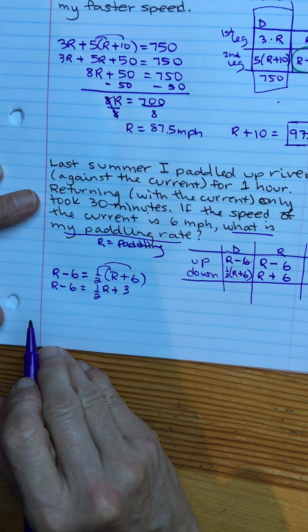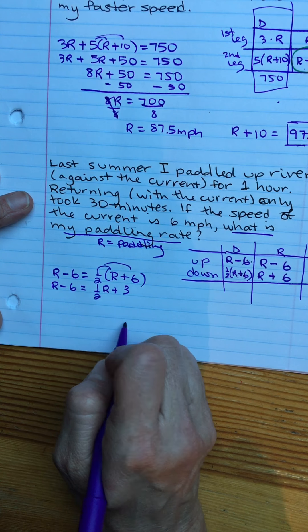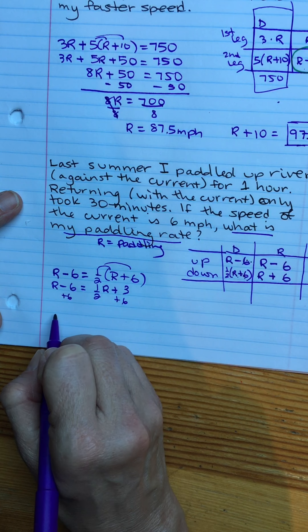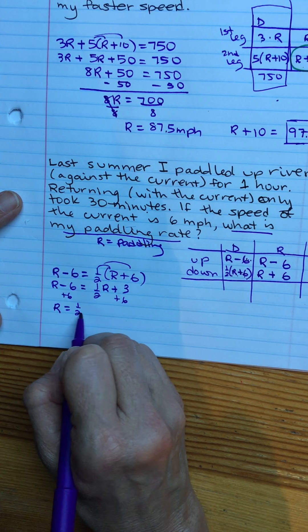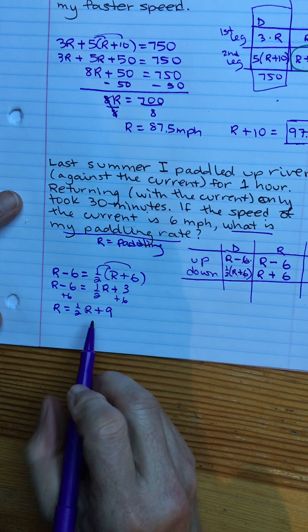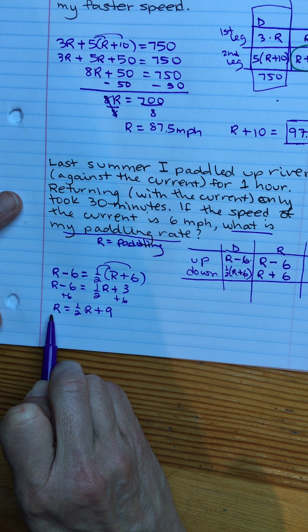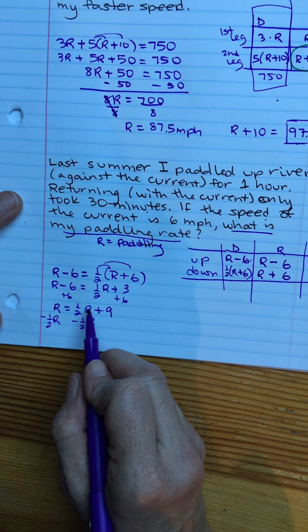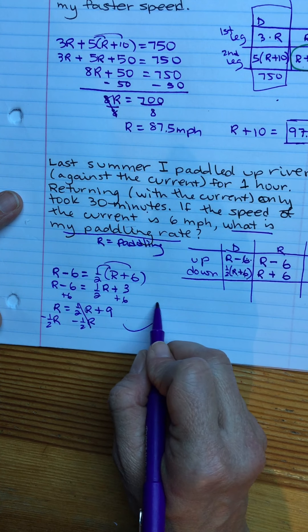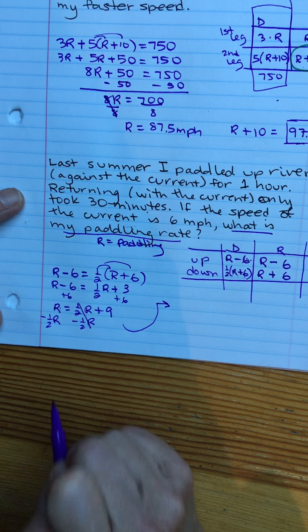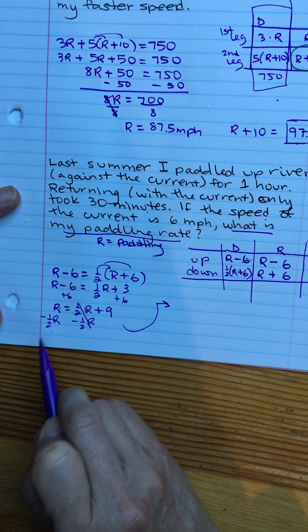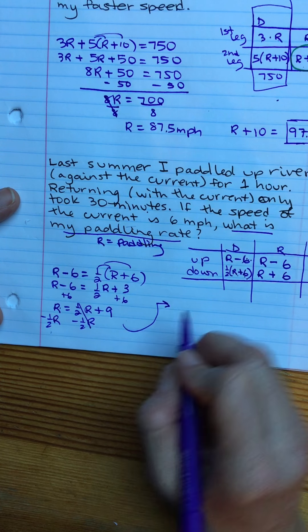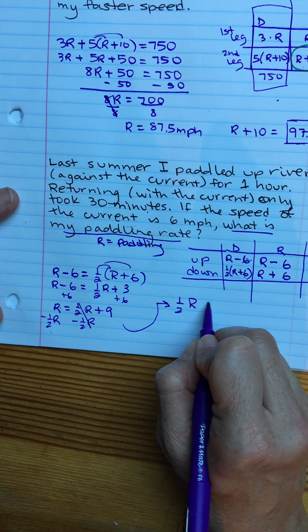Grab all your R's together on one side, all your numbers on the other. So I'm moving terms now. I'm going to add six to both sides. And so now we have R equals one half R plus nine. So now the one half R needs to come over here with the other R. So I'm going to subtract one half R from both sides. Gather all the R terms together. So now I have R minus one half R. If I have one R and I lose half an R, I'm left with half an R. So half R equals nine.